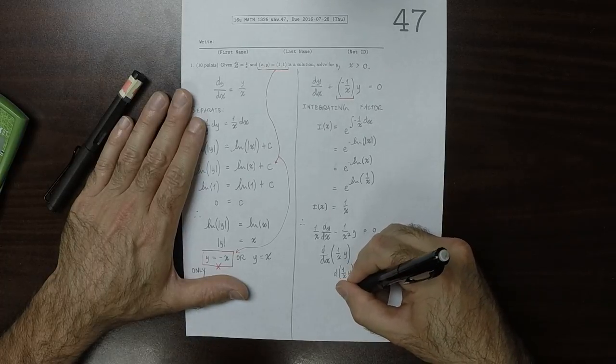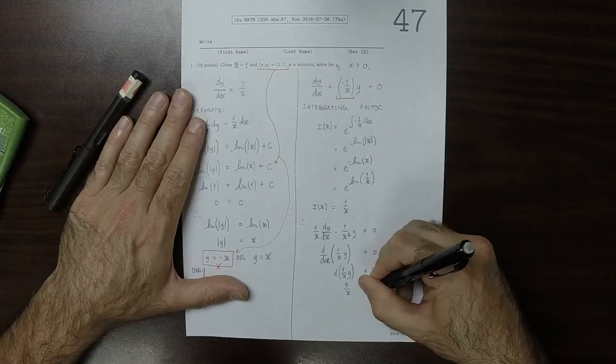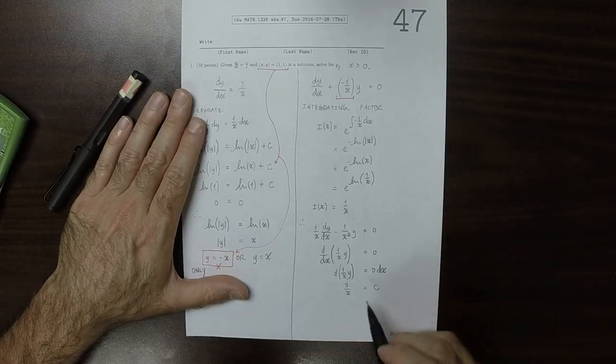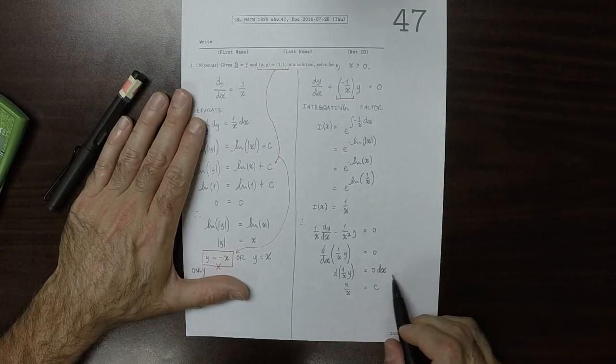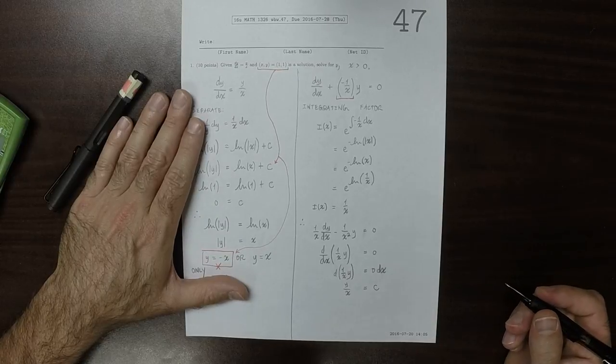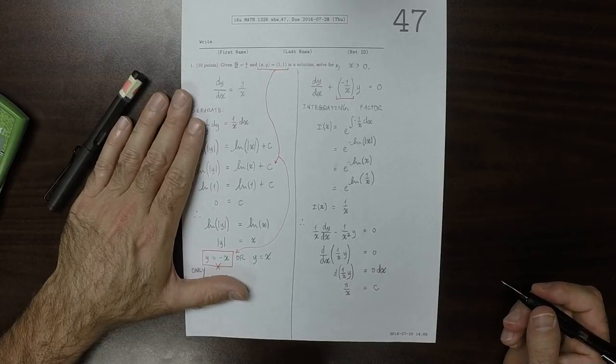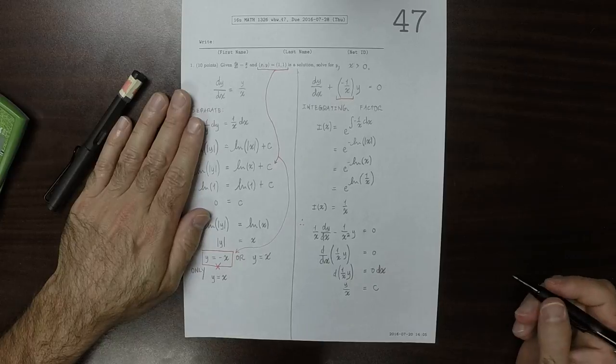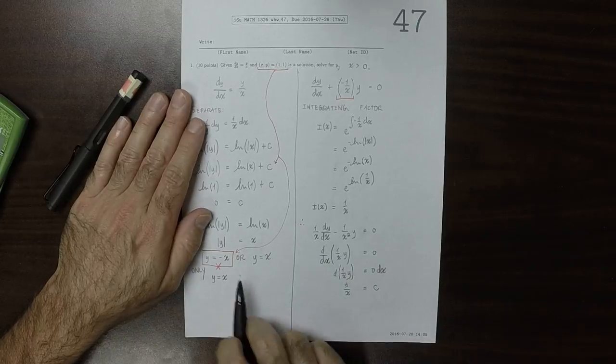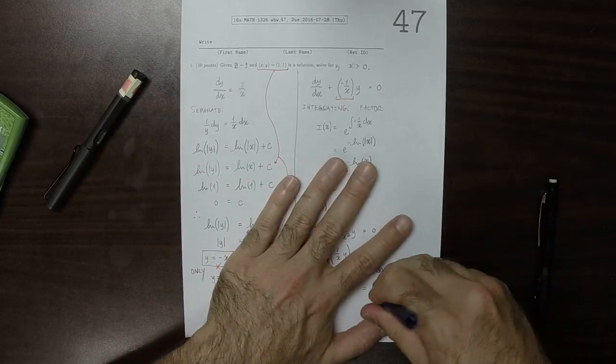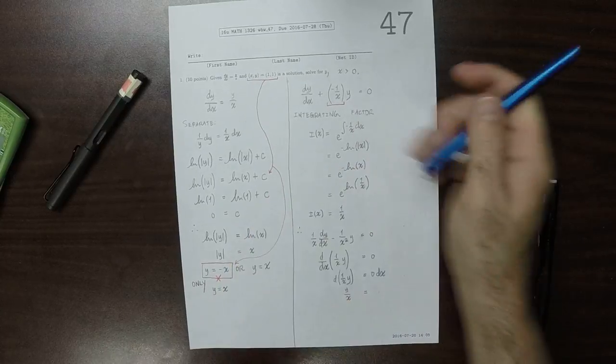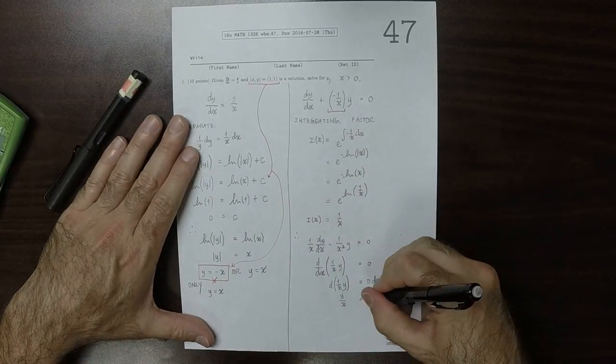So y over x is c, because the antiderivative of 0 dx is a constant, c. And this c, I should really write a different letter so it's not to be confused with this c, so I'll write k.